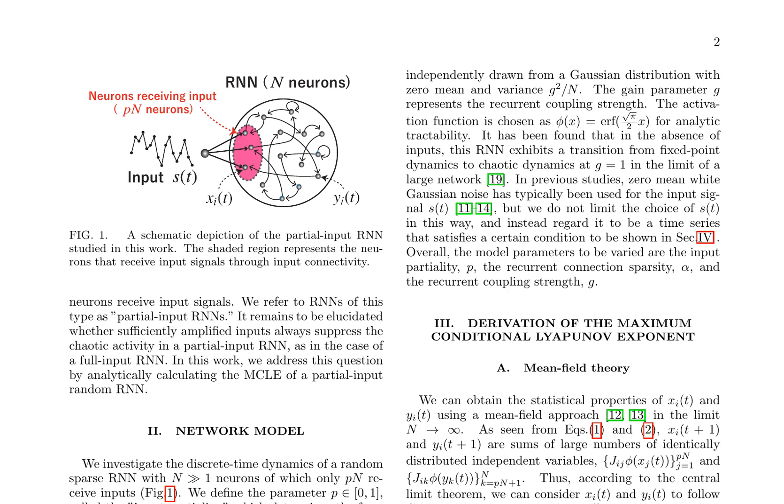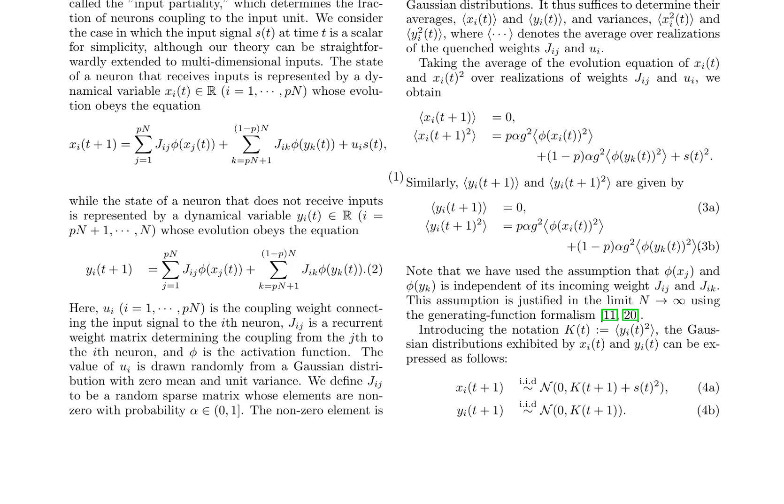Assuming that state variables x_i(t) and y_i(t) follow Gaussian distributions in the limit n → ∞, the evolution equations for their averages and variances are derived, and the distributions of x_i(t) and y_i(t) are expressed as Gaussian distributions. The primary objective is to determine the maximum conditional Lyapunov exponent, MCLE, of this partial input RNN model, which will be discussed in subsequent sections.